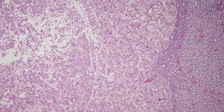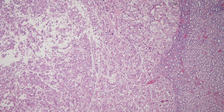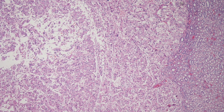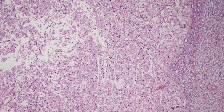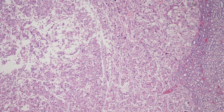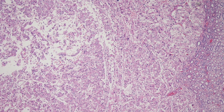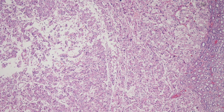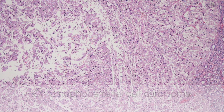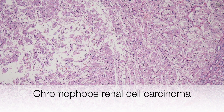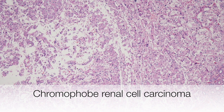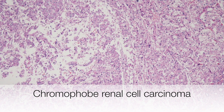The third case was a hemorrhagic mass approximately 85mm across in the radical nephrectomy specimen from a 41-year-old female. The diagnosis here is chromophobe renal cell carcinoma.